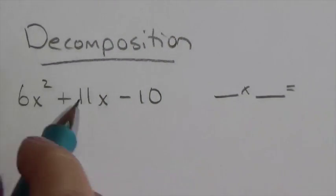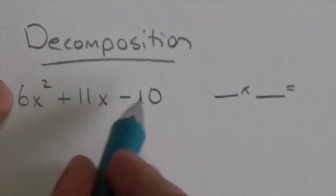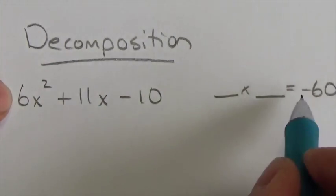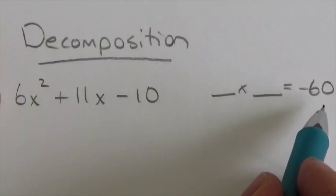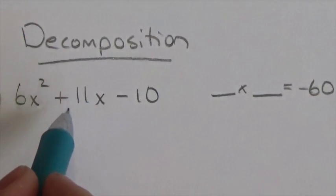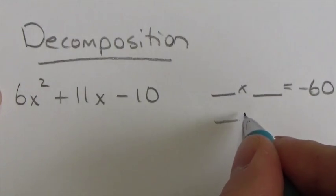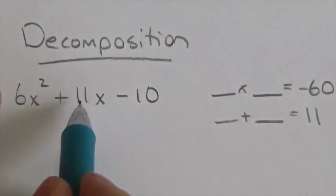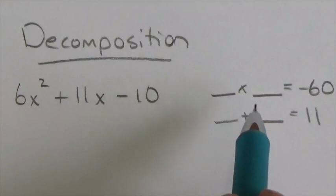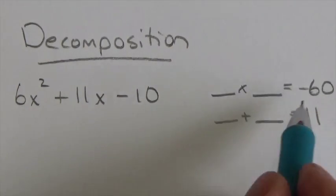The first property of these numbers is that their product is going to be the same as the product of the leading coefficient and the constant. So the product I'm looking for is going to be, sorry, two numbers I'm looking for will have a product of negative 60, and they will also have a sum corresponding to the coefficient of the linear term, that middle term there. So I'm looking for two very special numbers whose product is going to be negative 60, whose sum will be 11.